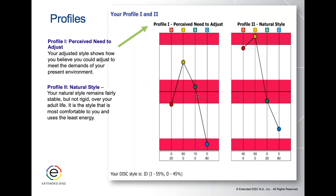Here's a quick overview of how to interpret it — though it does take training. Look at Profile 2 first: this person has I and D above the middle line, so they are an ID profile. When you look at Profile 1, you can see the adjustments they're making. Most obviously, this person wants to downplay their D style — it was clearly above the middle line in Profile 2 but is clearly below it in Profile 1. This means they perceive that direct, results-oriented, fast-paced D behavior is not valued in their present environment.